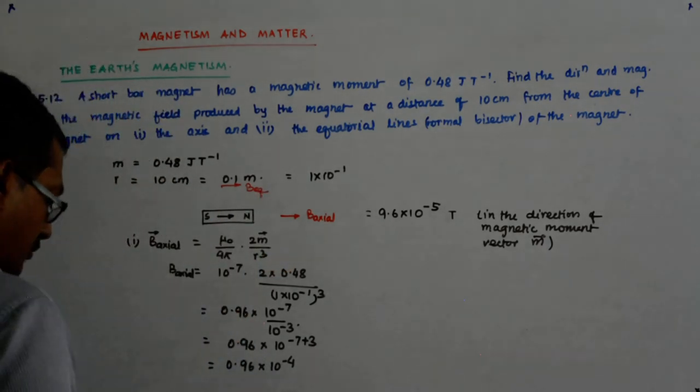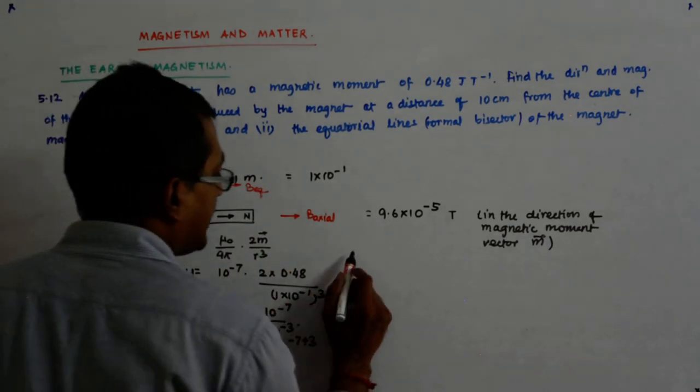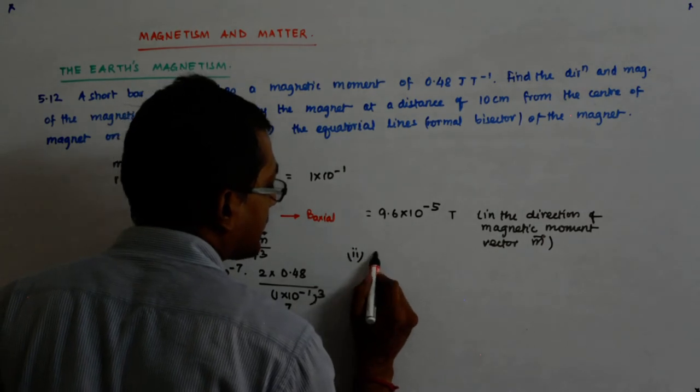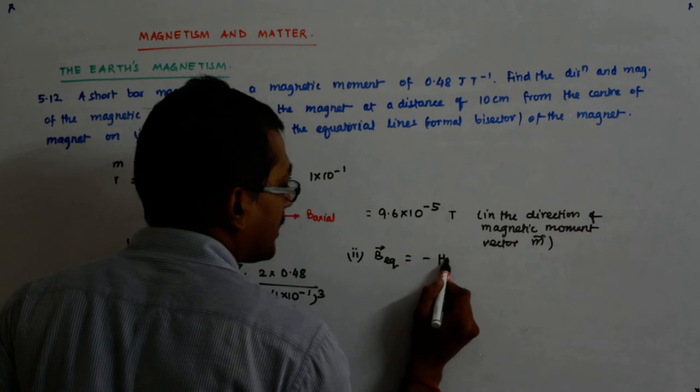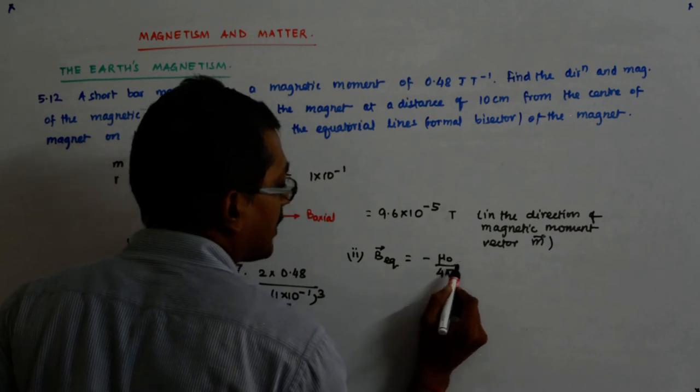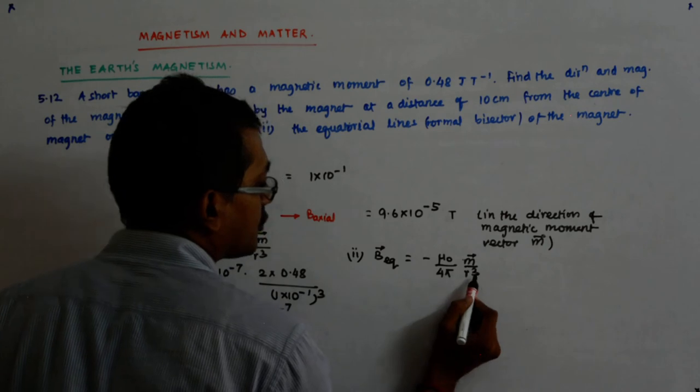And what is the formula for B equatorial in the vector form? B equatorial is equal to minus mu0 upon 4pi M upon R cube.